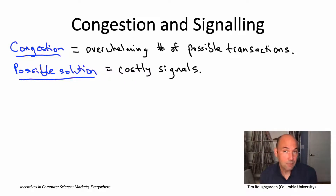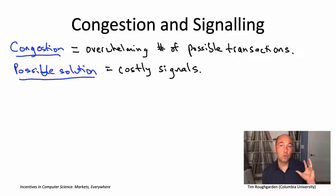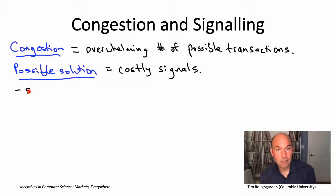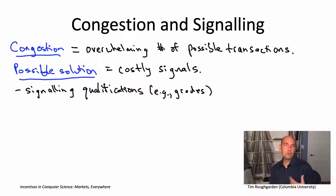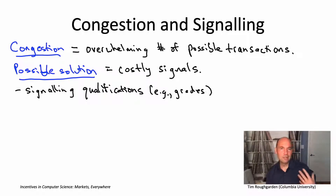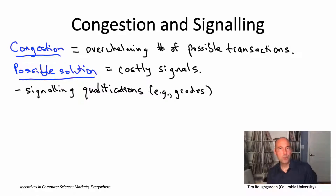Signals come in different types. One type of signal we're all familiar with is signaling your qualifications — for example, when you're applying for college, you signal your qualifications by reporting your test scores, your grades, and so on. Similarly, you signal your qualifications in a job application, a dating profile, etc. We'll talk about that in module three in the context of adverse selection.